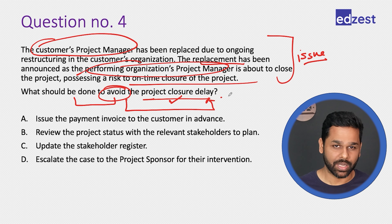Option C: update the stakeholder register. Yes, we would need to do that since a big stakeholder is changing, but updating the register in itself would not avoid the project closure delay — it does not answer the question. Eliminate C. Option D: escalate the case to the project sponsor for intervention. At this point we don't need that — we can handle this by having a discussion with stakeholders and planning accordingly. We don't need to involve the sponsor. B is the best choice.